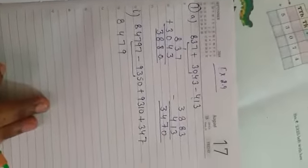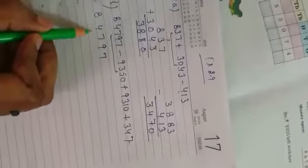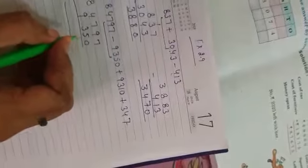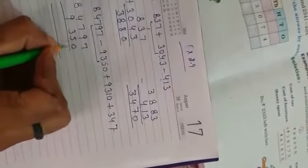Now, in the second sum, firstly I will subtract 9350 from 84,797. Firstly write 84,797 and after that subtract 9350 from it. 7 minus 0 is 7.